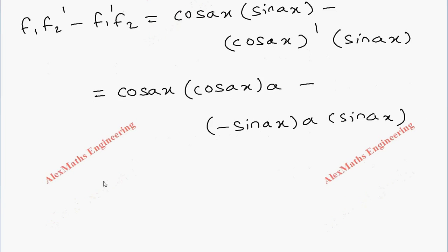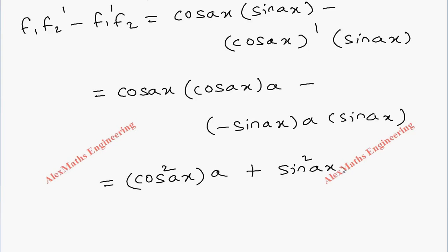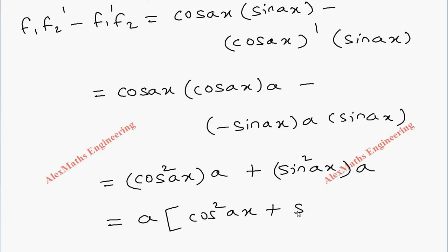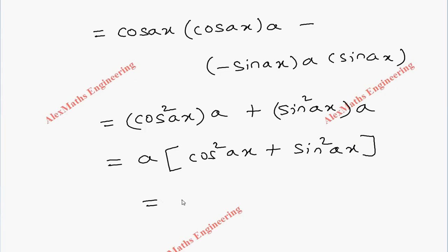So totally, we get cos²(ax) times a, plus sin²(ax) times a. Taking a as common, the remaining is in the form of cos²(theta) plus sin²(theta), which is cos²(ax) plus sin²(ax), and that gives 1. So finally the Wronskian value is a.